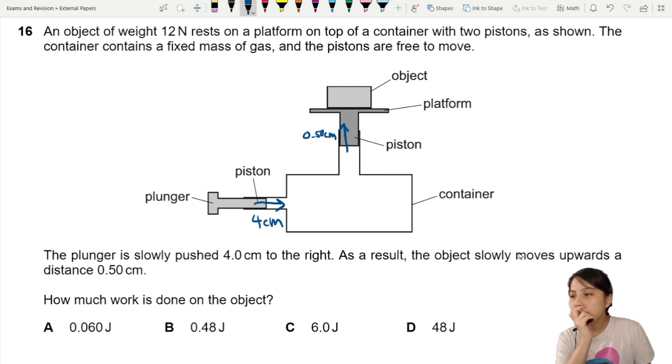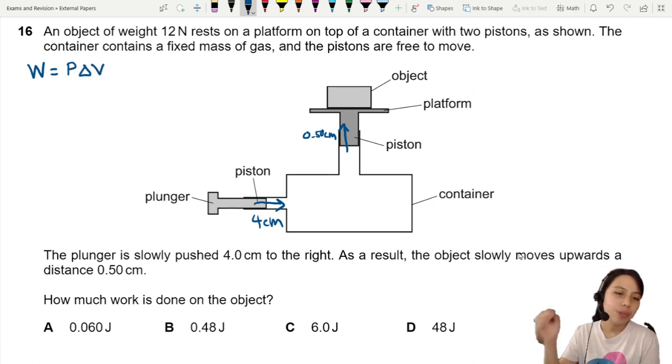This is work done due to gas. When we think of work done and gas, we have W equals to some constant pressure times the change in volume. Do we have enough information to do that here? Yes, we do.